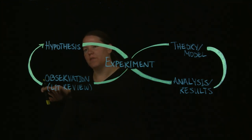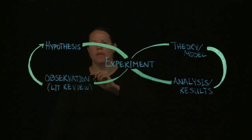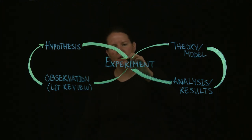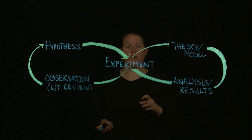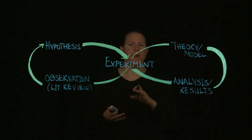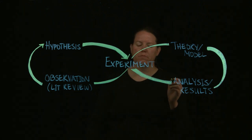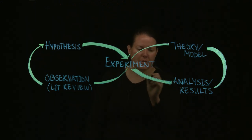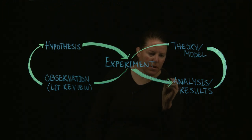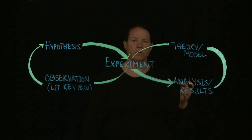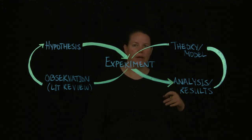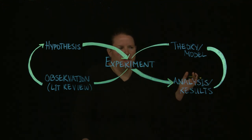We're going to go from observation, following the infinity symbol up to hypothesis. Once we have our hypothesis, we're going to design an experiment that will allow us to test that. These arrows could technically go backwards and forwards, but we're doing them one directional at the moment. From the experiment, once you run it, you'd like to know whether it worked or not, so you need to get some analysis. You need to look at your results, your data collection, and figure out: did that actually do what I thought it did or not?